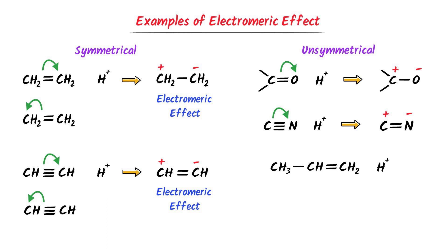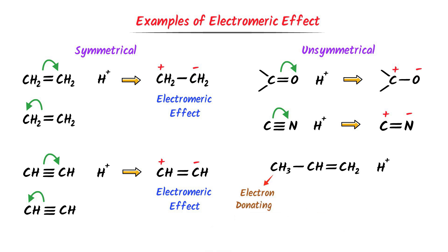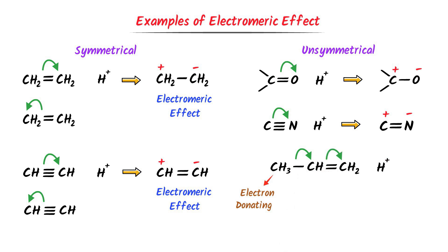In the third unsymmetrical compound, there is an alkyl group CH₃, which is an electron-donating group. Hence, the pi electrons shift in the direction toward that carbon. A positive charge appears on one carbon and a negative charge on the other. Thus, electromeric effect is observed in this compound as well. These are the different examples of electromeric effect.